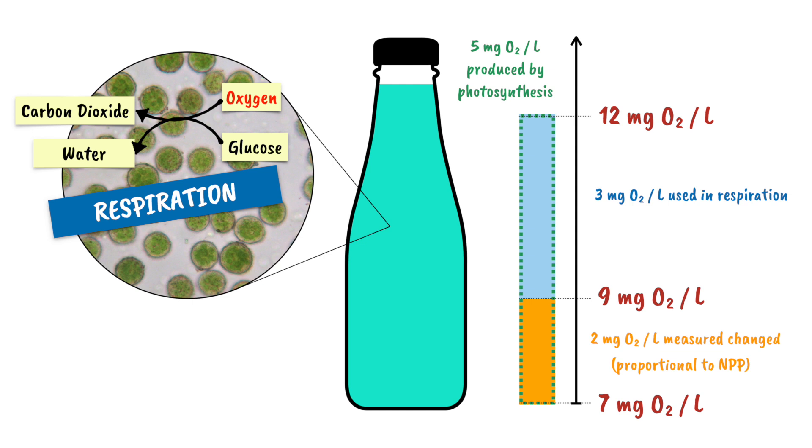So, determining NPP is relatively simple. We just need to measure the dissolved oxygen levels before and after a given amount of time.